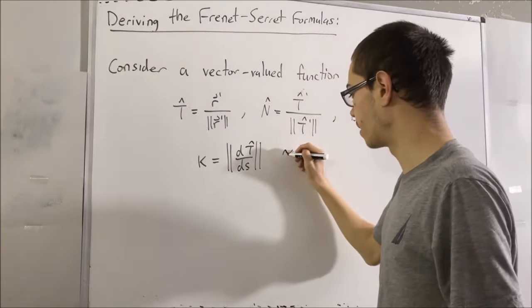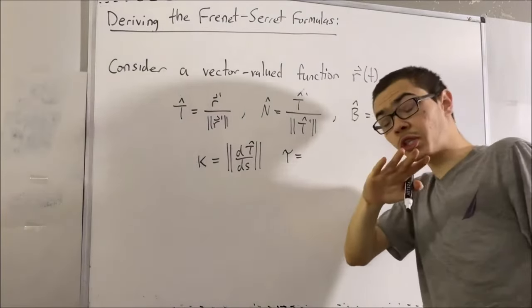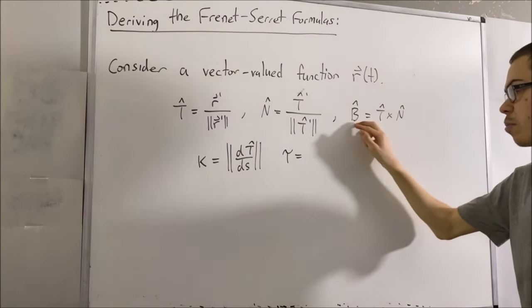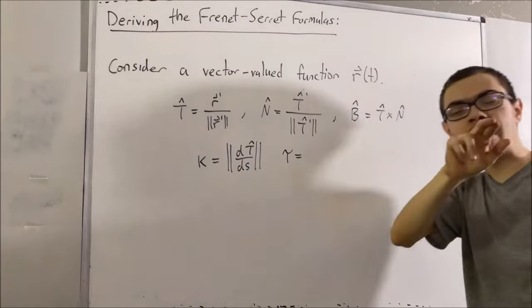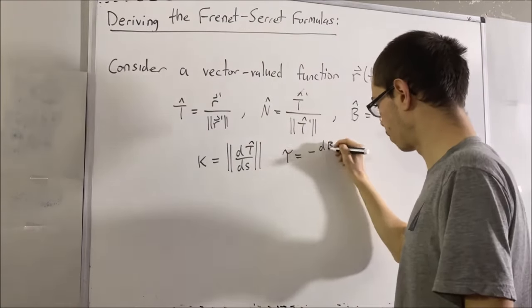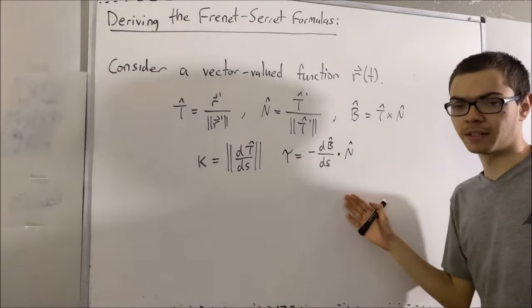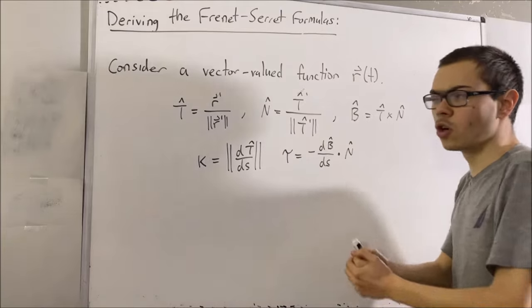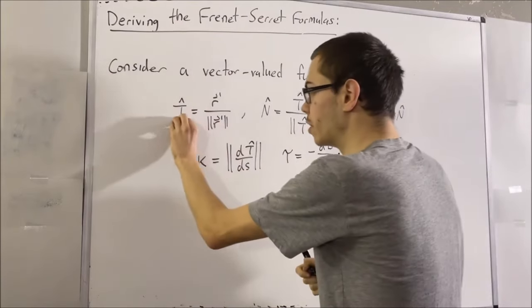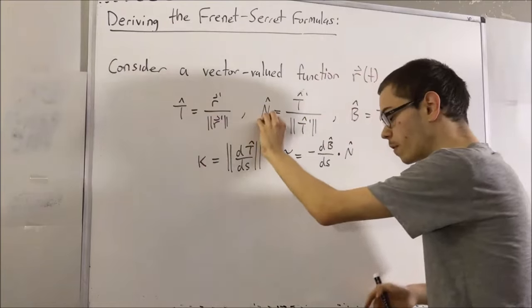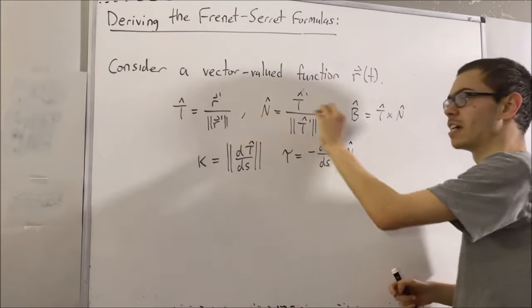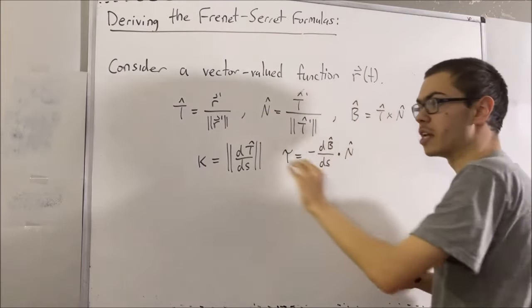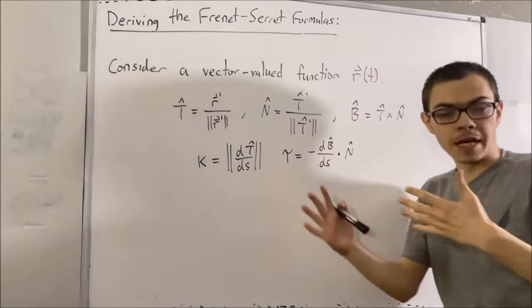Torsion is typically denoted by the Greek letter tau, and it's defined as the negative of the derivative of the unit binormal vector with respect to arc length, dotted with the unit normal vector. The Frenet-Serret formulas are about asking: what is the derivative of the unit tangent vector with respect to arc length? What is the derivative of the unit normal vector with respect to arc length? And what is the derivative of the unit binormal vector with respect to arc length? — expressed in terms of these five scalar and vector quantities.